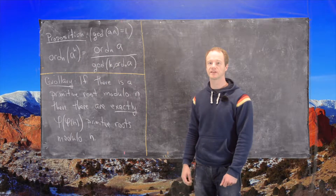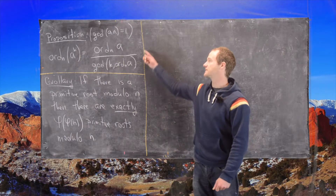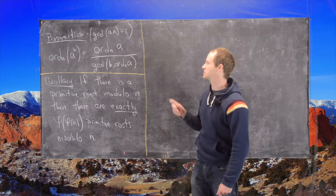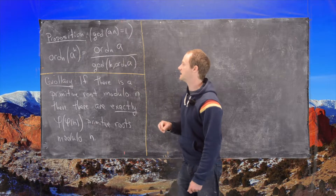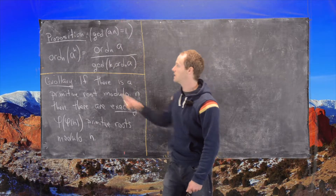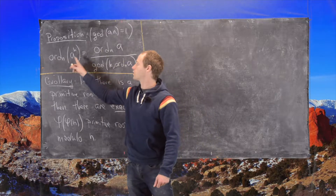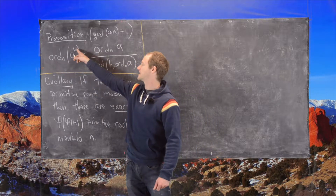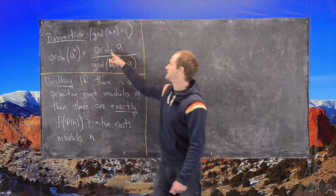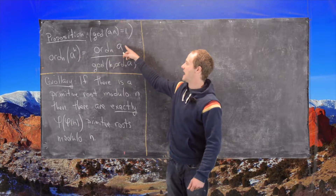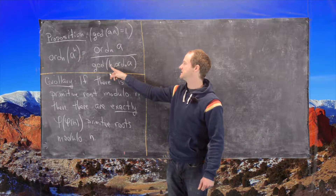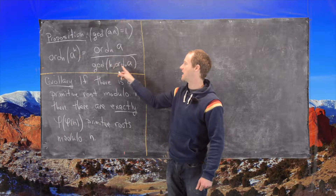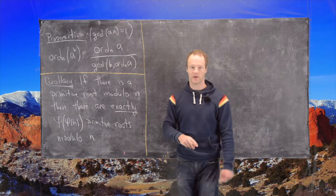Previously we proved the following proposition: if the GCD of a and n is 1, then the order of a^k is the order of a divided by the GCD of k and the order of a.